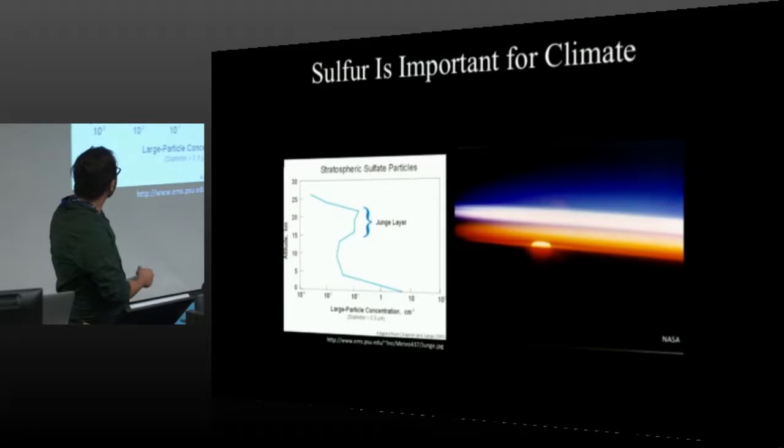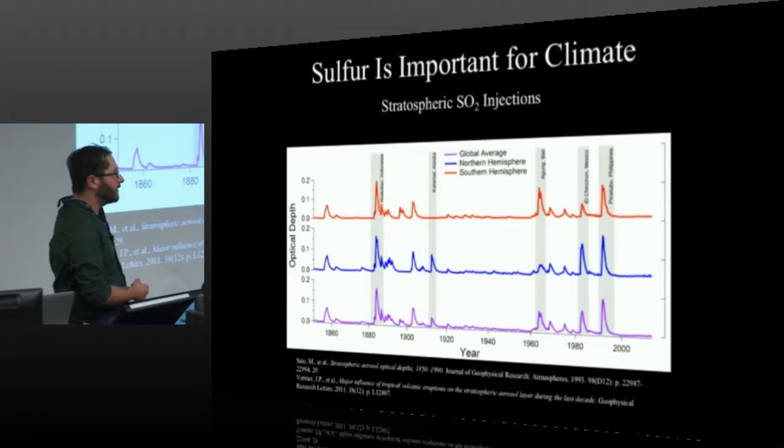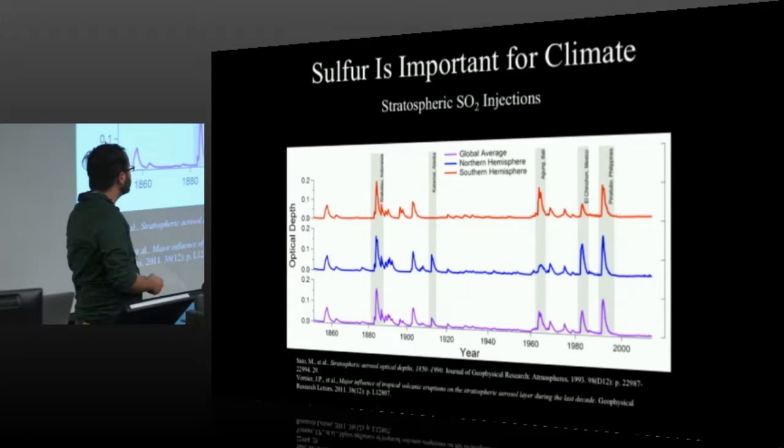So in Earth, we actually end up with this Junge layer, which is a layer of aerosol that you can see at about 15 to 20 kilometers in the atmosphere. And you can see that it actually reflects away quite a large amount of light. And any time that there's a large eruption on Earth that injects large amounts of SO2 into the stratosphere, we see these large changes in optical depth where an increase in optical depth means that there's more light being scattered away. And these sorts of events can have fractions of a degree Celsius change on the planet overall temperature.